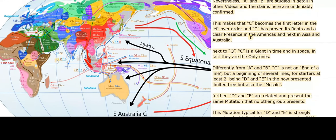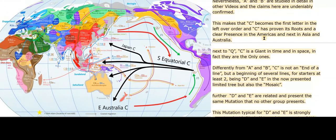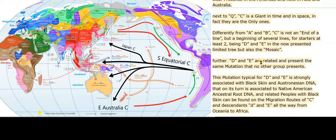C becomes the first letter in the leftover order and C has proven its roots and a clear presence in the Americas and next in Asia and Australia. Next to Q, C is a giant in time and in space — in fact they are the only ones. Differently from A and B, C is not an end of a line, but a beginning of several lines — for starters at least two, being D and E in the now presented limited tree, but also the mosaic.